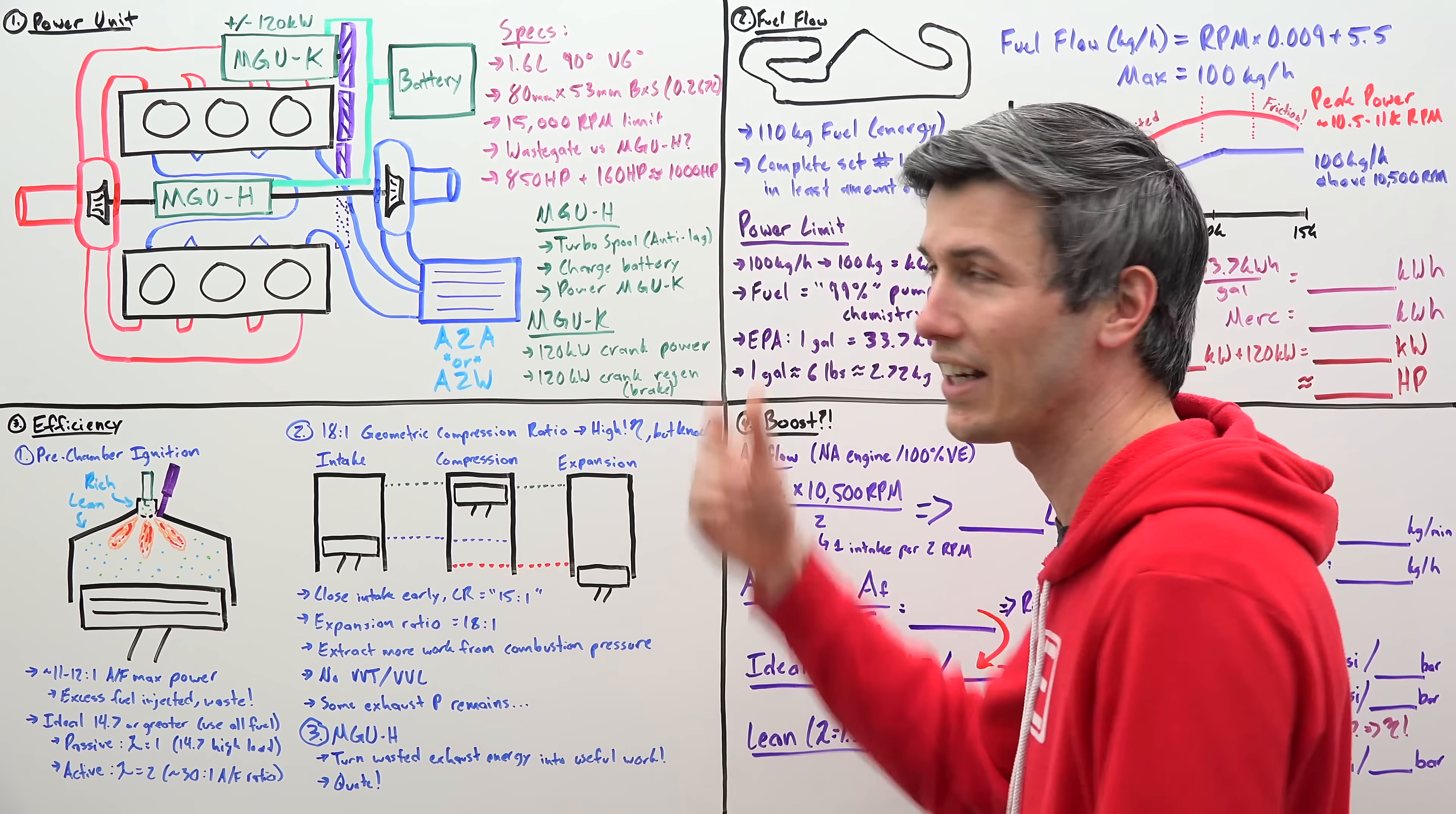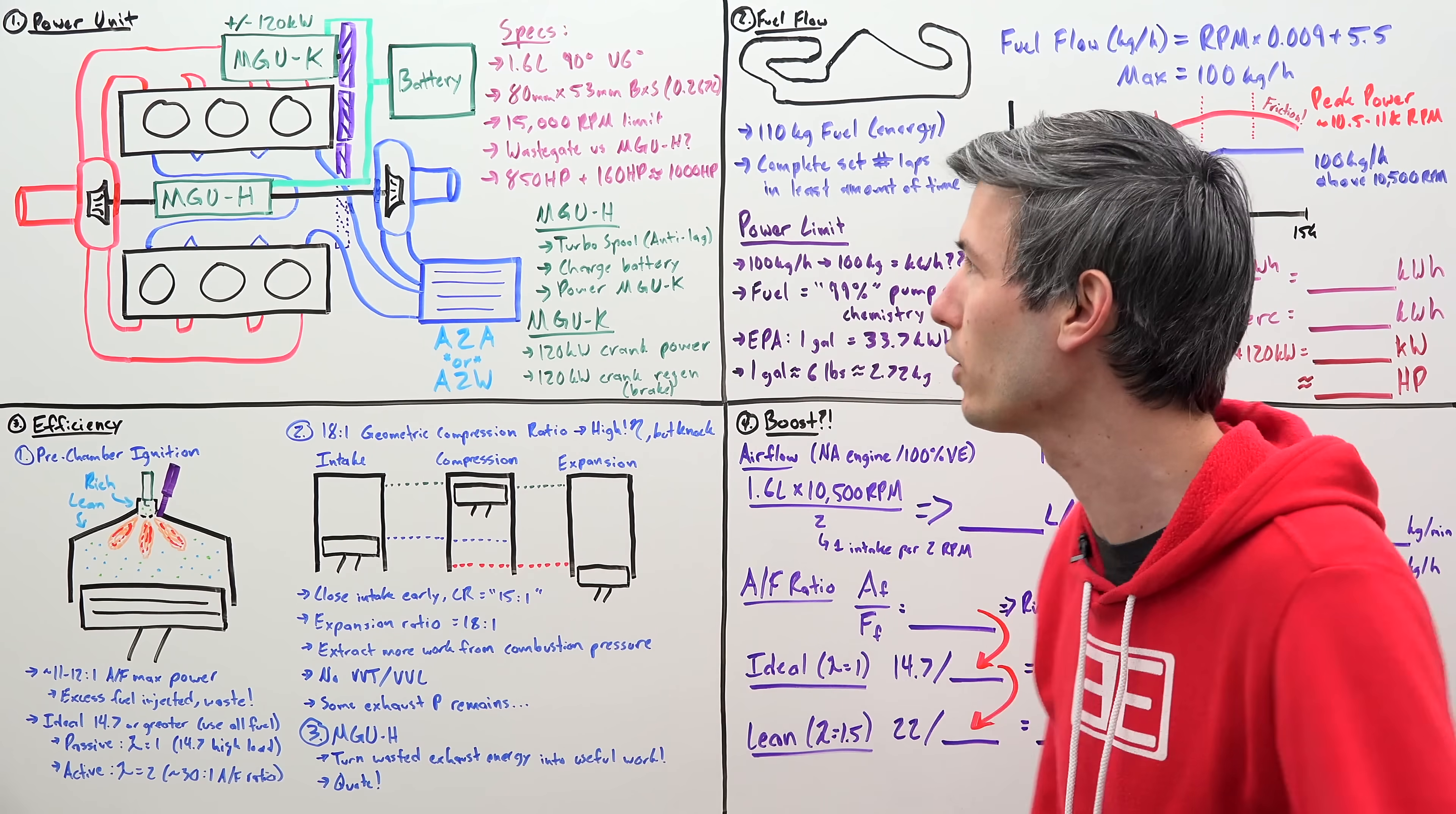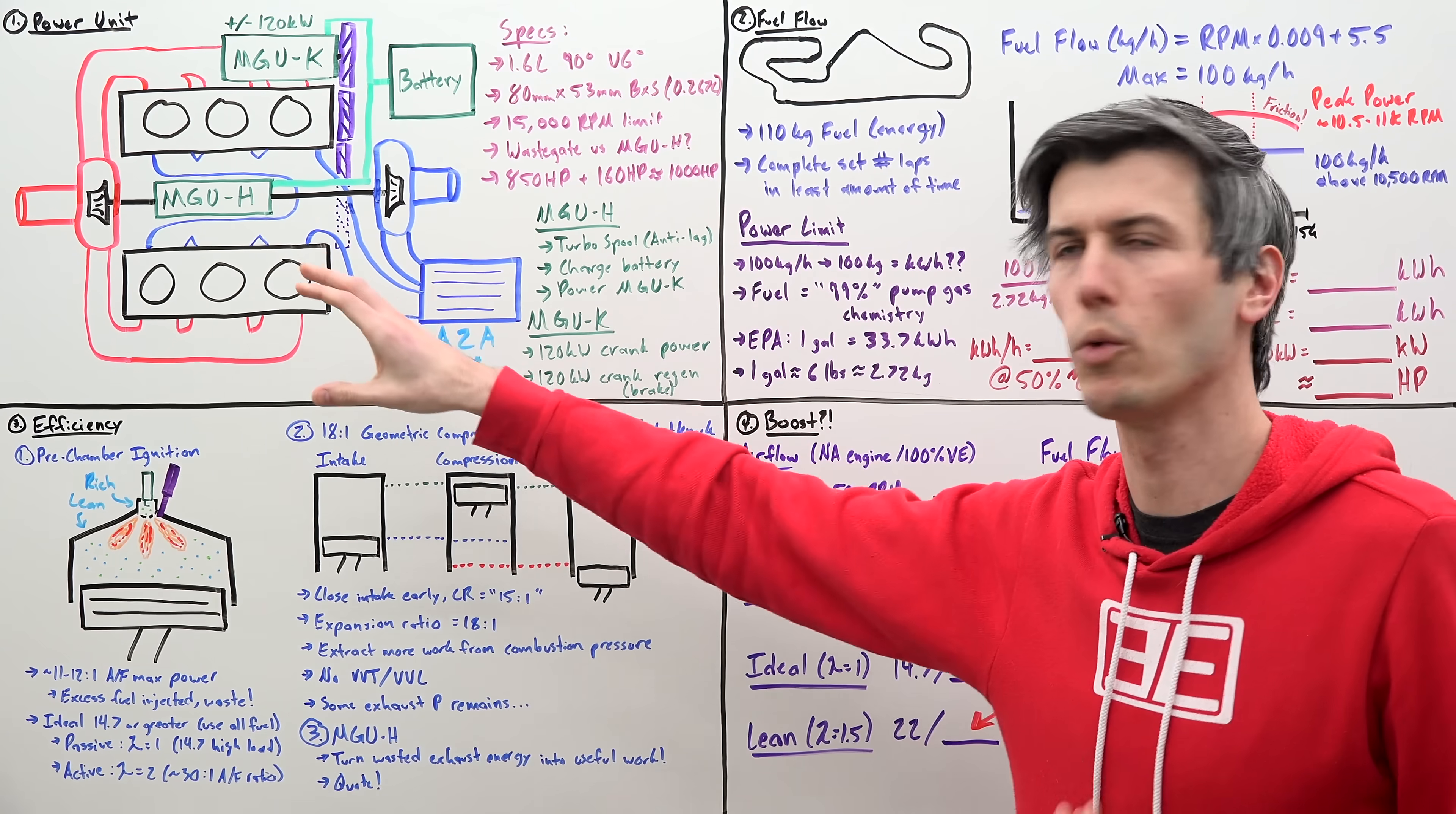So the specifications are set in that this must be a 1.6 liter 90 degree V6 engine and your bore is set at 80 millimeters, which essentially means your stroke is set at 53 millimeters, giving you a per cylinder size of 0.267 liters. So this is about half the size of the cylinders used in today's production cars, which tend to sit at about half a liter for their cylinder size. This engine revs up to 15,000 RPM. That is the limit. Though realistically you'll rarely ever see drivers shifting anywhere near this.